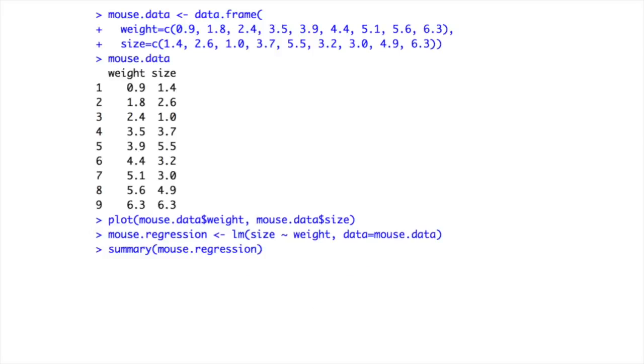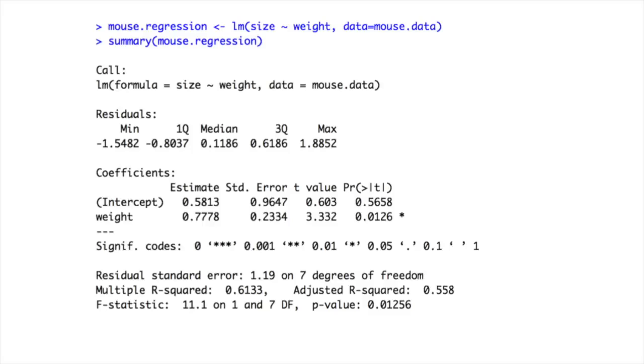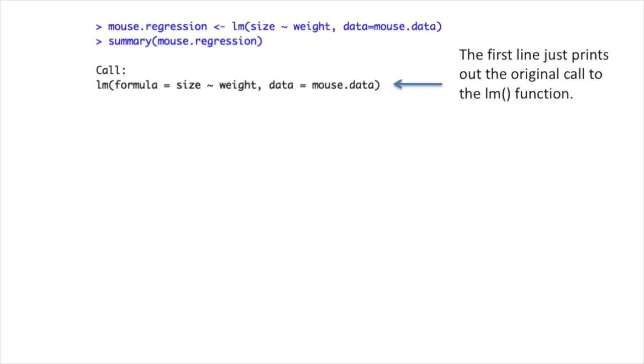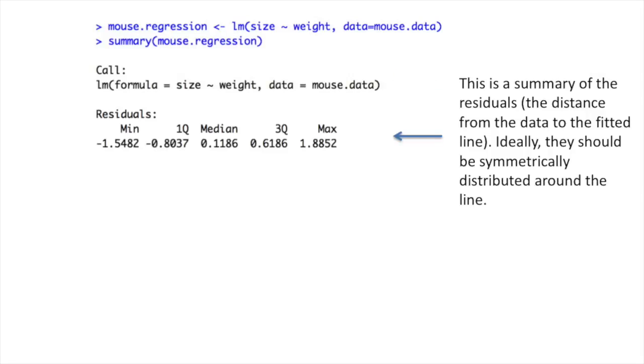In R, the meat of doing a regression is in the Summary function. This function generates all kinds of output, and I'm going to walk through it one step at a time. The first line just prints out the original call to the LM, or Linear Models function. After that, you get a summary of the residuals. Those are the distance from the data to the fitted line. Ideally, they should be symmetrically distributed about the line.